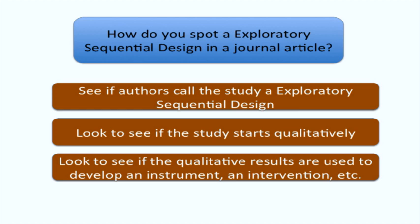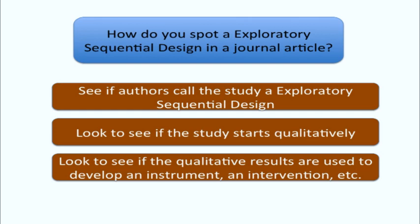How do you spot an exploratory sequential design in a journal article? First, look to see if the authors are calling it an exploratory design. Next, check to see if it starts qualitatively — does a qualitative phase precede a quantitative phase? Then look to see in that quantitative phase what's actually being developed: is an instrument being developed, are activities being developed for an intervention, is a new typology being developed? You look for that quantitative component being developed and then whether it's tested out.